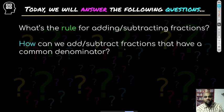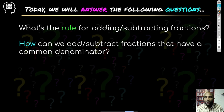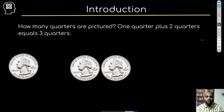Two things: what's the rule for adding and subtracting fractions with like denominators, and how can we add and subtract fractions that have common denominators? I'll interchangeably say 'like denominator' or 'common denominators' — it's the same thing; it just means the denominator is the same. There's a rule and a practice you want to employ when doing it.